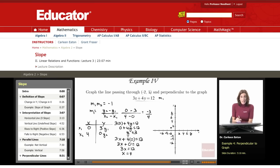I know that the line I'm looking for, which is going to have a slope m2, is perpendicular to this line. So I'm going to say that m1 equals negative 3 fourths, and I'm looking for m2.